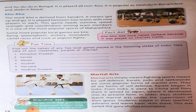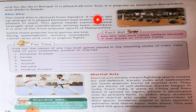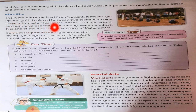Now I am going to start reading. The heading is Kho Kho. The word Kho is derived from Sanskrit. It means get up and go. It is played between two teams with nine players in each. This game needs stamina, speed, strength, and coordination among team members.